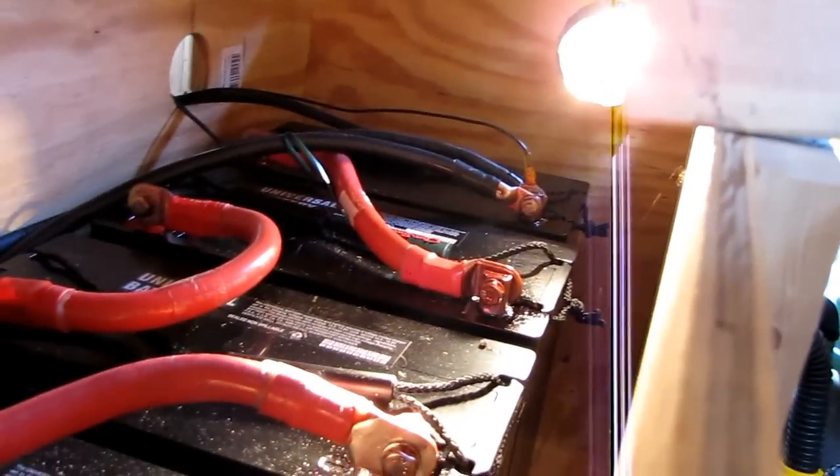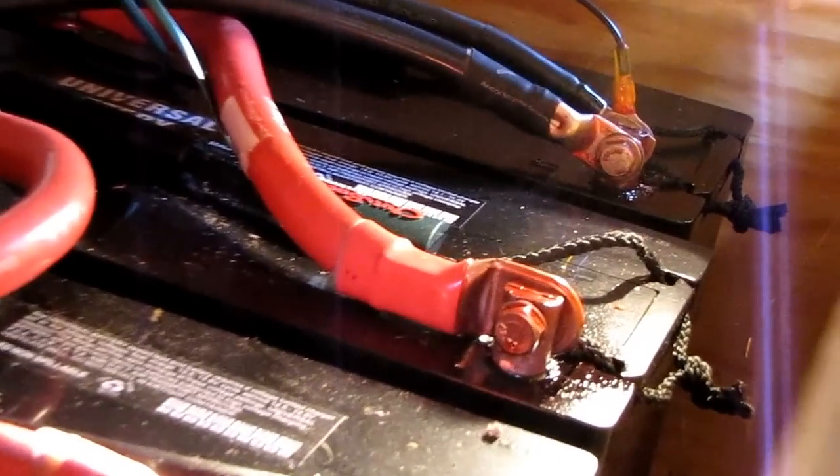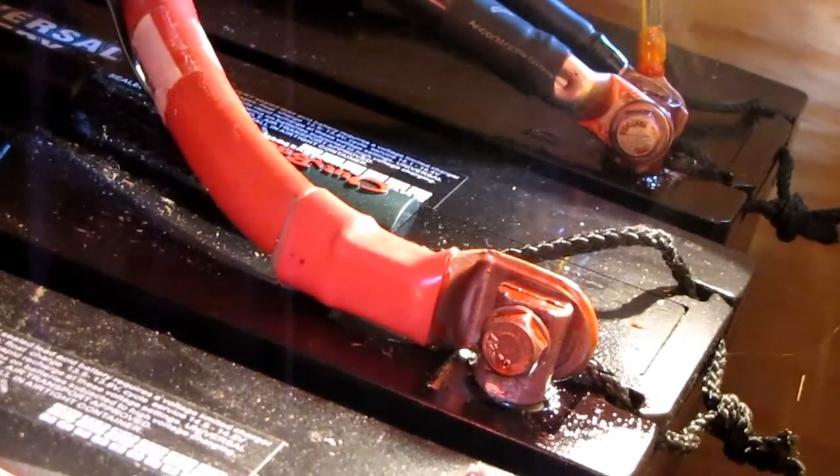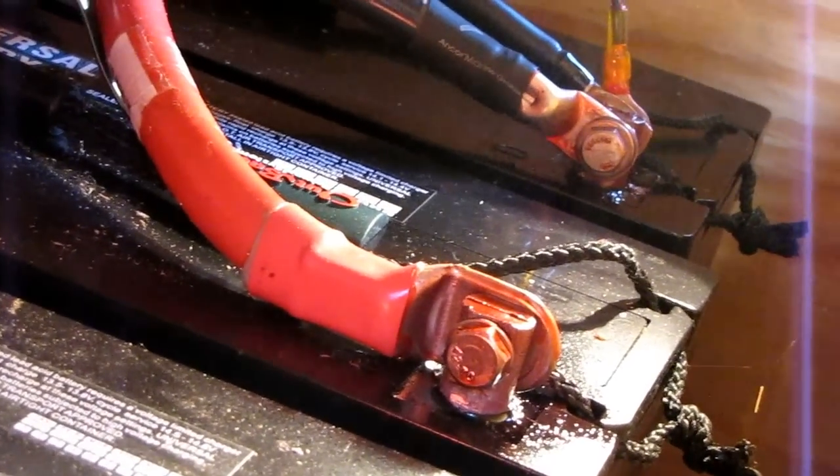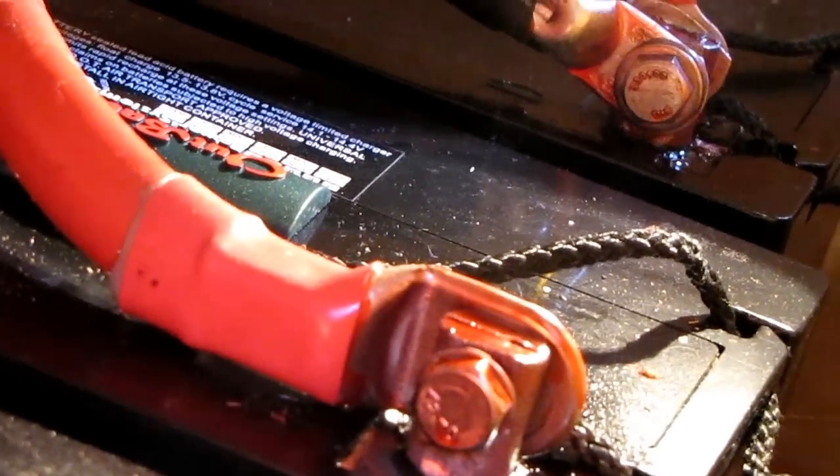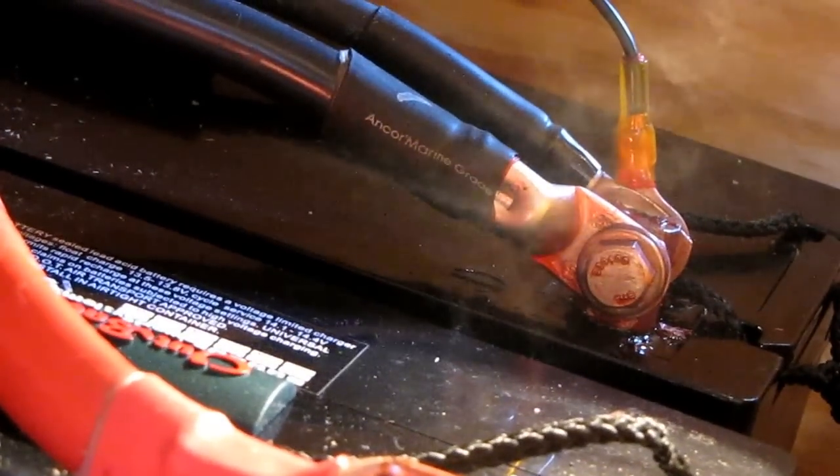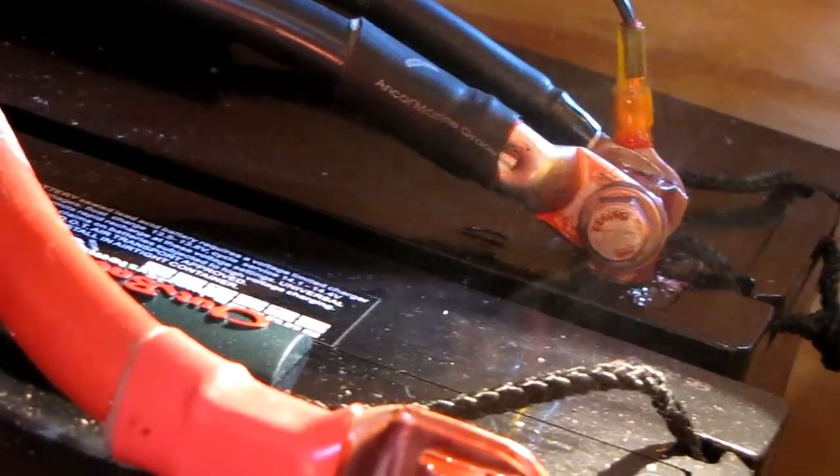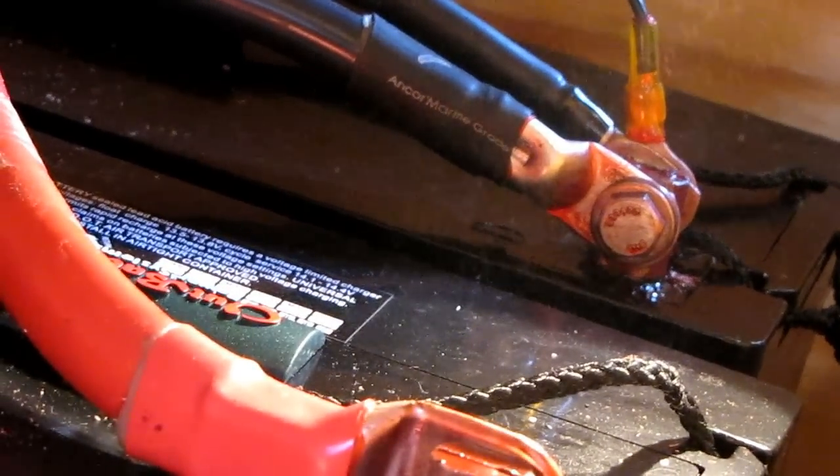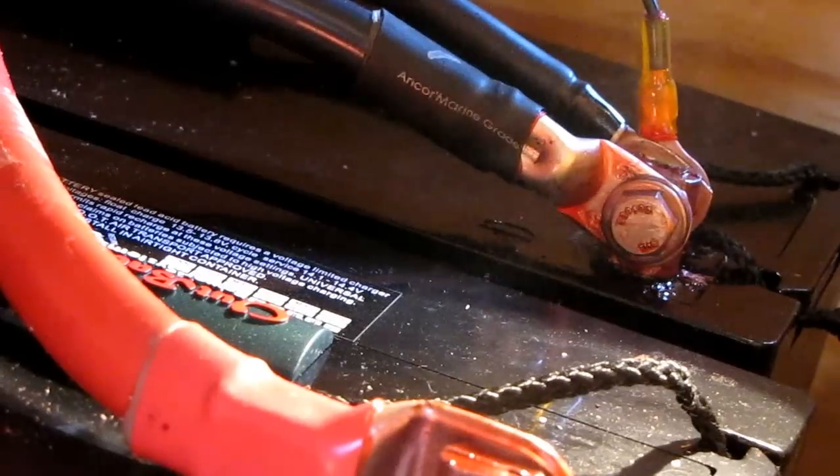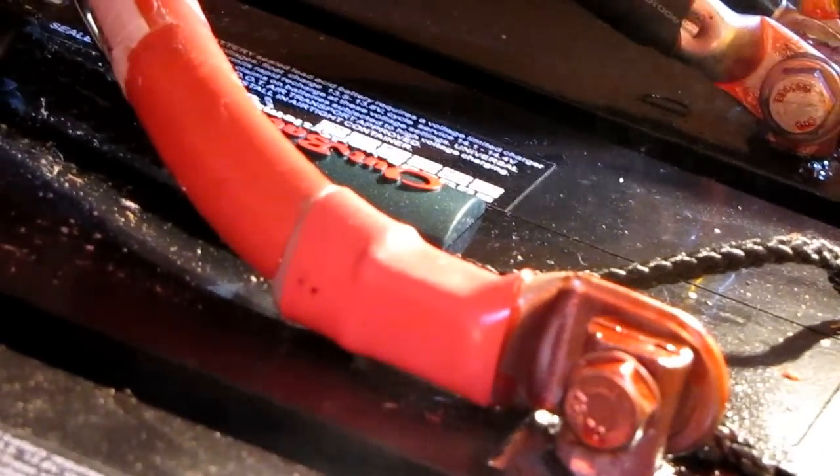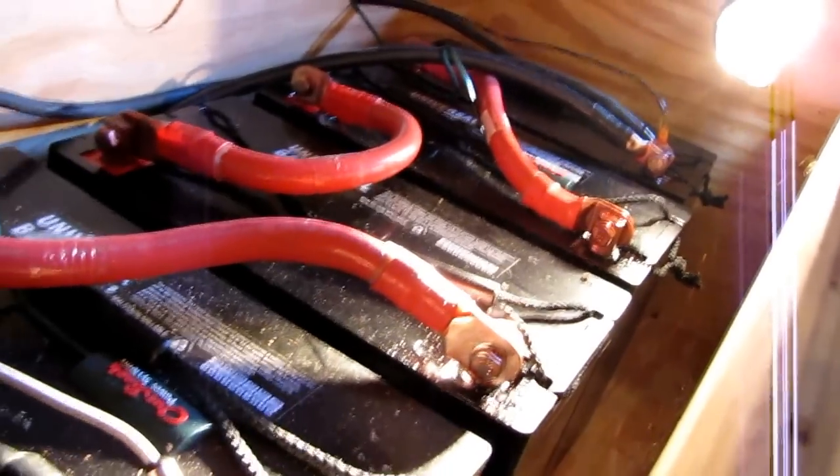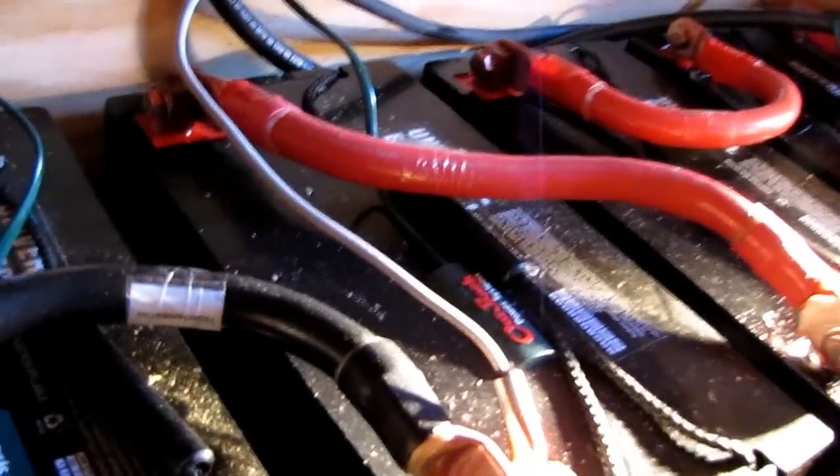I just got through spraying my cables again. I do it every so often with CRC. See the vapors coming off of them? There you go, that's the vapors hovering around on the battery box. These are AGM batteries, 27 series, 90 amp hours apiece.